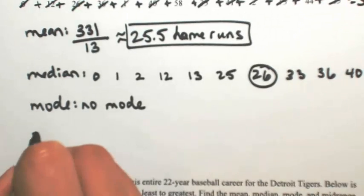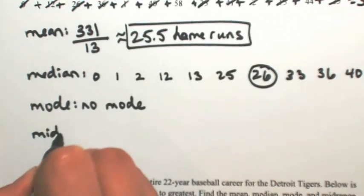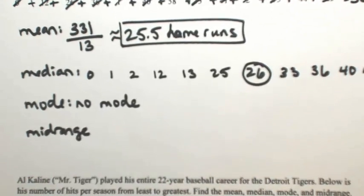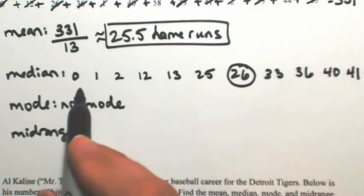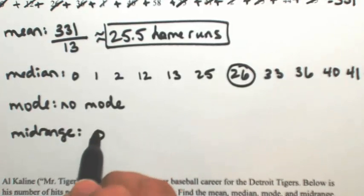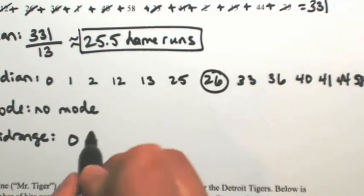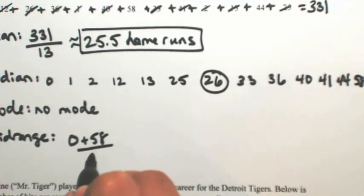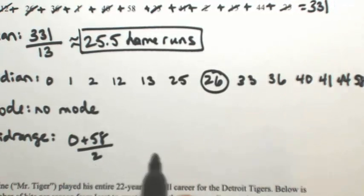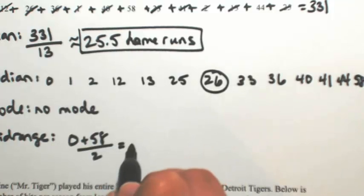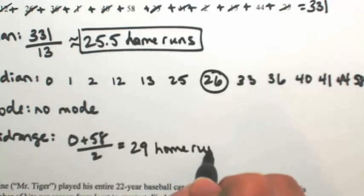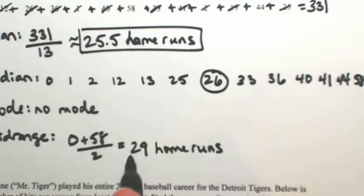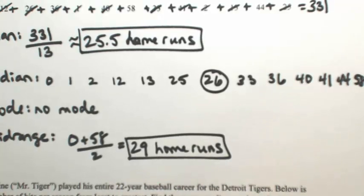And then the last thing we want is the mid-range. Mid-range is basically the average of the lowest and the highest number. The lowest number is zero and the highest number was 58. So if I take those two, add them up and divide by two, we're going to get 29.